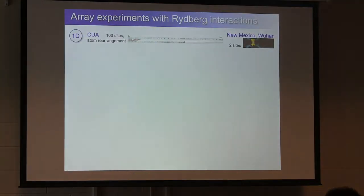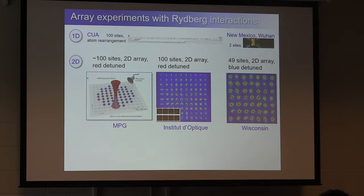So there's a lot of experiments going on. There's the 1D experiments that we'll hear more on later in the workshop here with 100 sites and atom rearrangement. There's a couple 1D two-site experiments. There's the Sandia work, and also a recent experiment in Wuhan in China doing a two-atom Rydberg gate experiment.